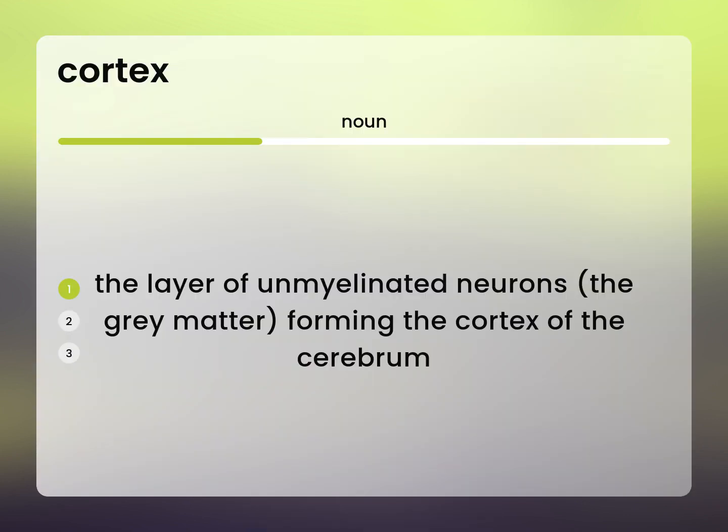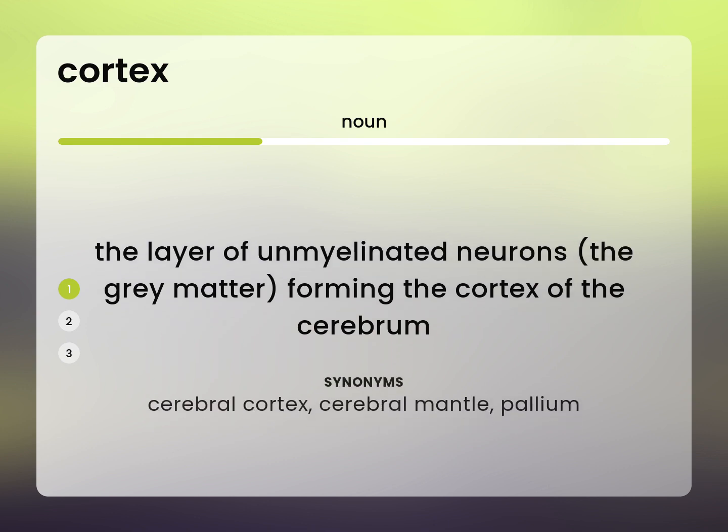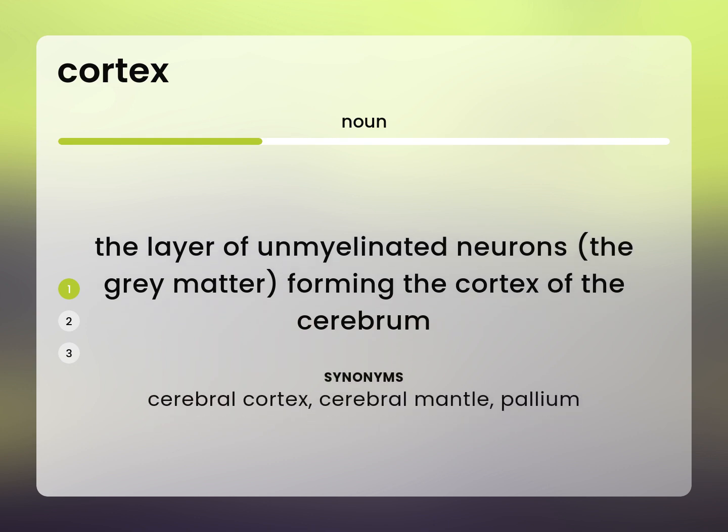The layer of unmyelinated neurons, the gray matter, forming the cortex of the cerebrum. Cerebral cortex, cerebral mantle, pallium.